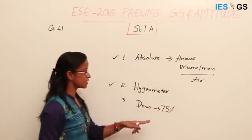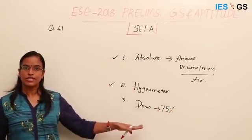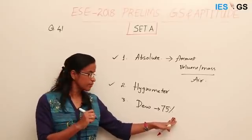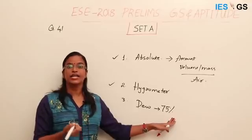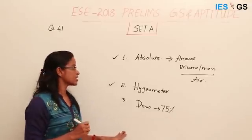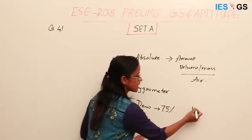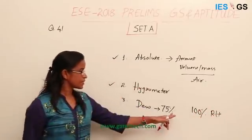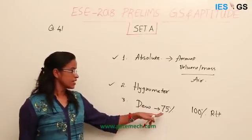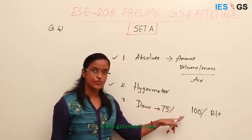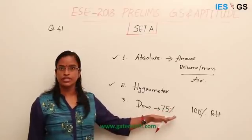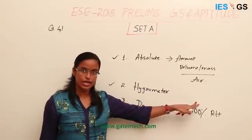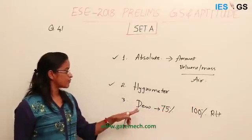The third statement tells that dew point is the point at which relative humidity is 75%. Relative humidity measures how much water vapor content is in a particular volume of air compared to saturated air. Saturated air means 100% relative humidity. So 75% relative humidity means the air is not fully saturated — there is still capacity remaining to become saturated. What is the dew point?